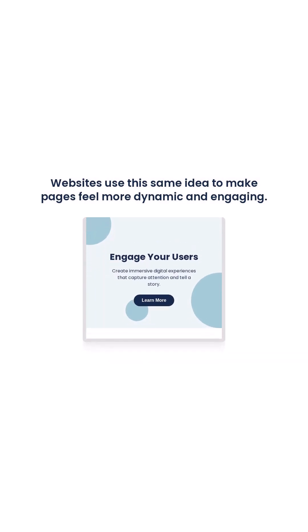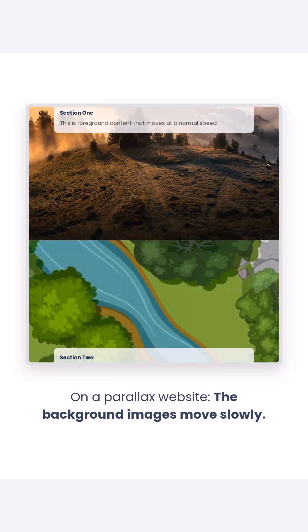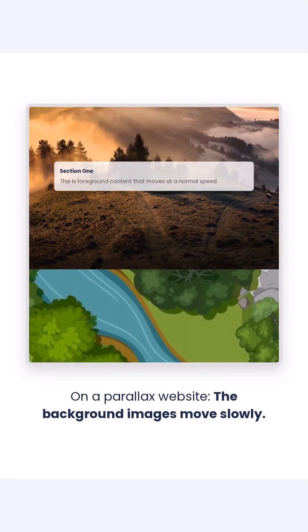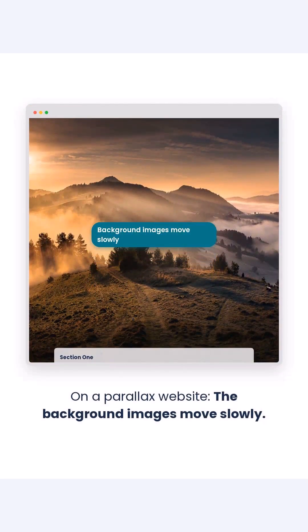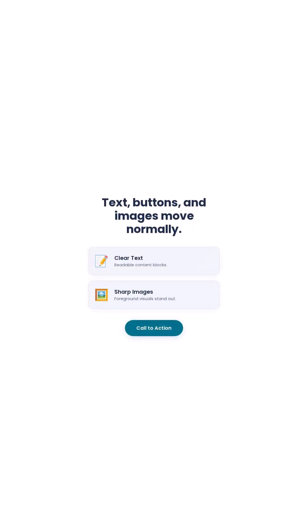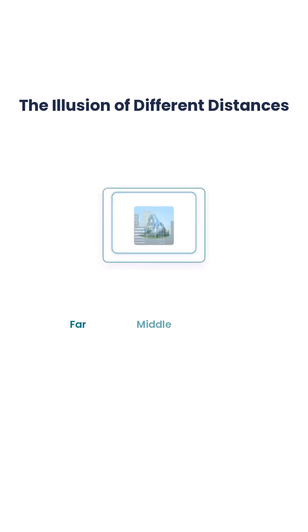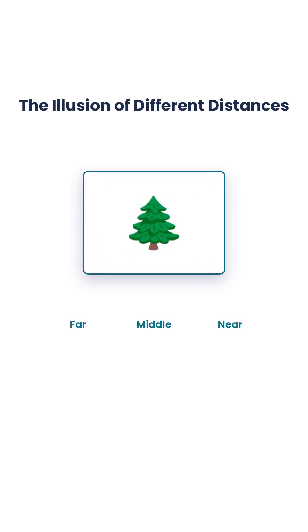On a parallax website, the background images move slowly. The text, buttons, and images — the content in front — move normally. This gives the user the illusion that elements are at different distances.